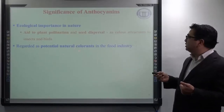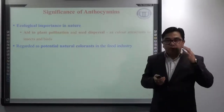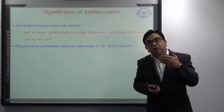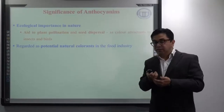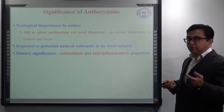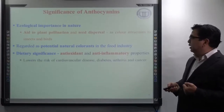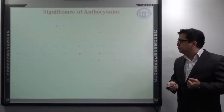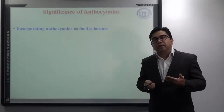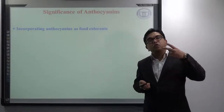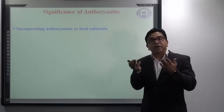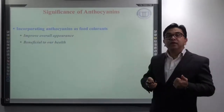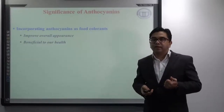They are also regarded as potential natural colorants in the food industry. Not only do they help in plant pollination because of their color, but combined with their biological effects they are also heavily used in the food industry. Regarding dietary significance, they are found to be highly antioxidant and anti-inflammatory in nature, and they are capable of lowering the risk of cardiovascular disease, diabetes, arthritis, and various types of cancer. Incorporating anthocyanins as food colorants has two main benefits: as a colorant they not only improve the appearance of food, but are also very beneficial to health.